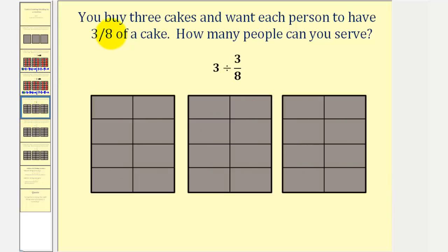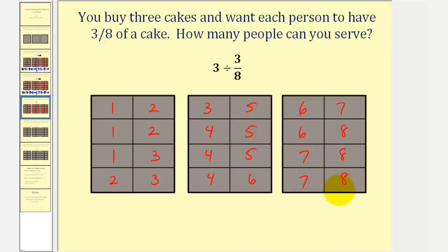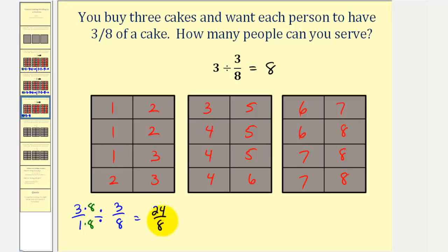Now let's try this again where each serving is three-eighths of a cake. We want to determine what is three divided by three-eighths, or how many three-eighths are there in three. Counting them: there's one serving of three-eighths, another, and so on. We have a total of eight servings of size three-eighths, so the quotient is eight. Procedurally, three over one divided by three-eighths — obtain a common denominator to find how many eighths are in three: twenty-four eighths. Twenty-four divided by three is eight.